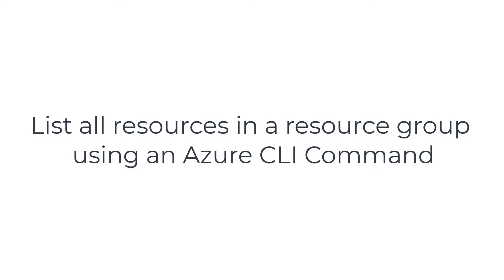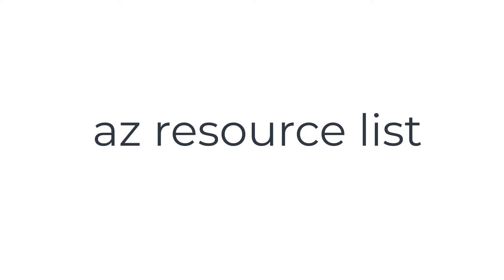One of the nice things about the Azure portal is that if you click on a resource group, you can list all of the resources inside that list and get a great overview of what's happening inside that resource group. Now, if we're using our command line tools, it is also possible to have that view as well. What I'm going to show you today is using the Azure CLI command how you can get that view of all the resources inside a resource group.